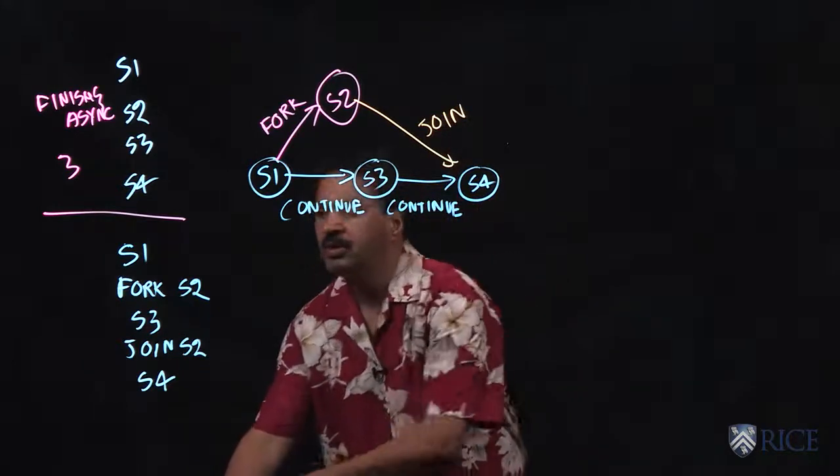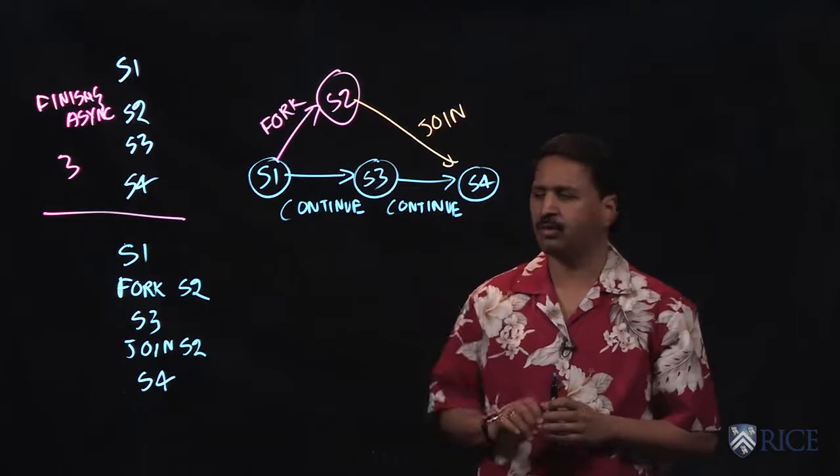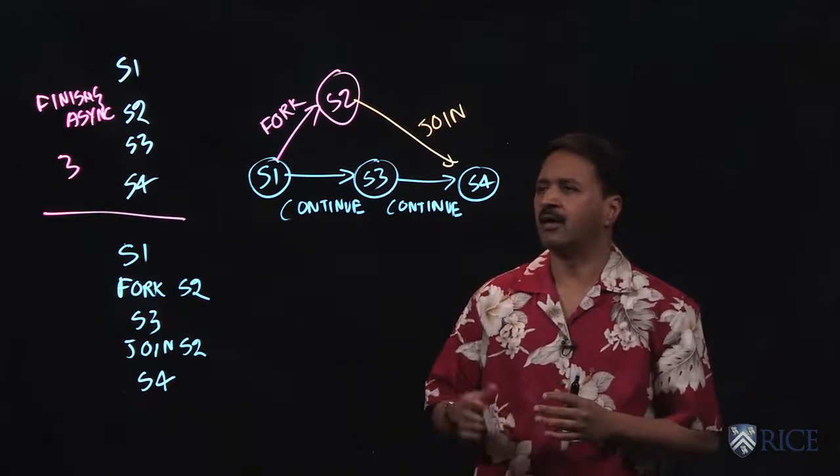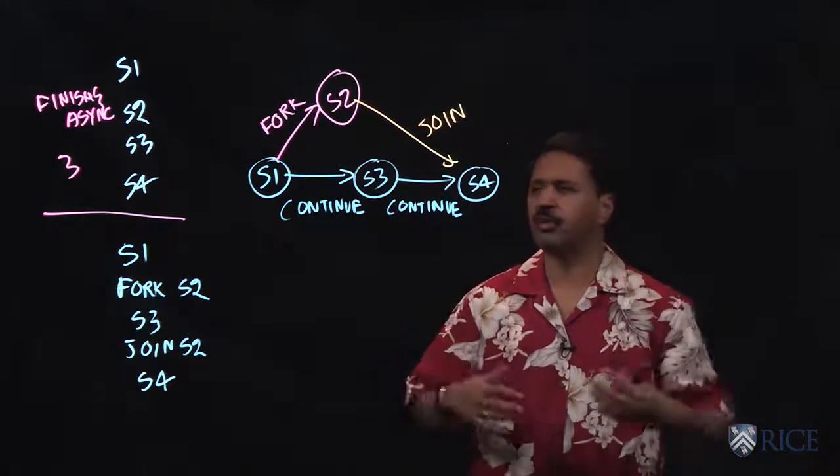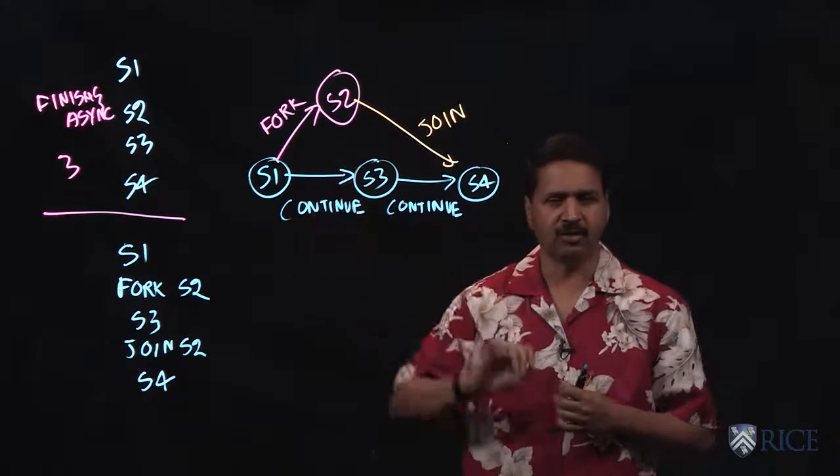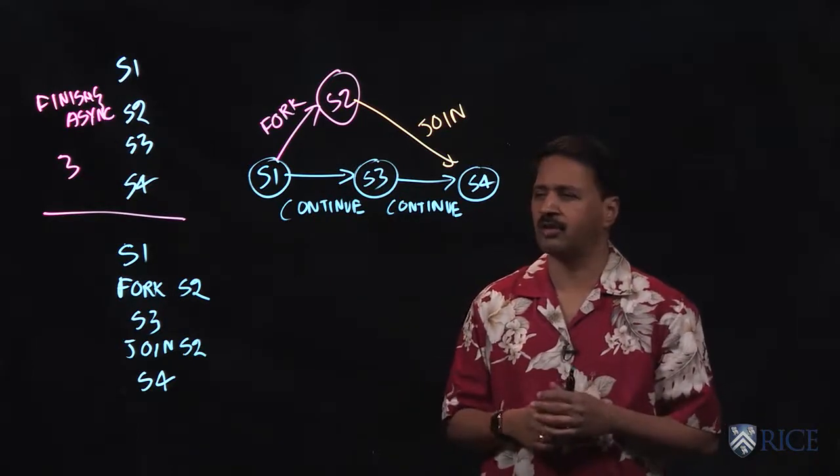So with these three kinds of edges, we see we can model the execution of this parallel program and in fact any parallel program as a graph that conceptually is built when the program is executing.